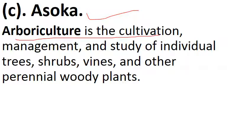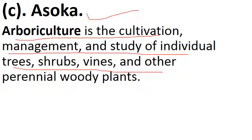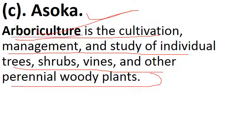Arboriculture is the cultivation, management, and study of individual trees, shrubs, vines, and other perennial woody plants. Ashoka was a great lover of nature, so he made arboriculture his state policy. Some similar words you should remember: Arboretum — where trees are planted for research and experimentation. Silviculture — the cultural management practice of trees only, not shrubs, vines, or other woody plants.